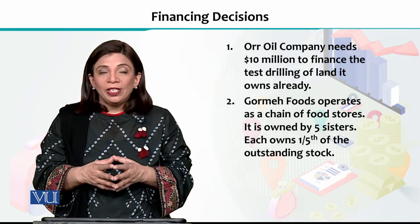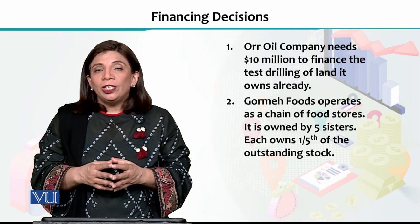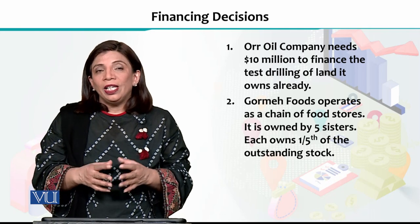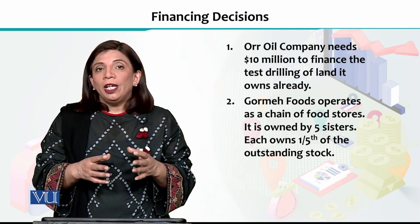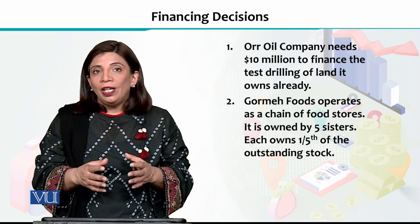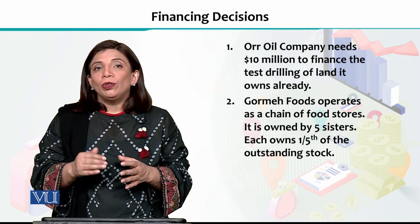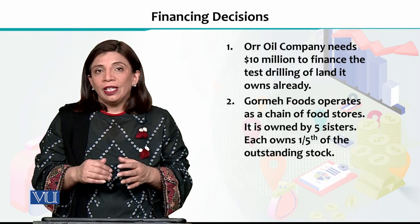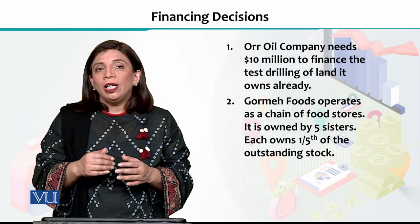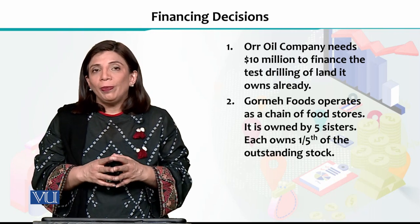As a first example, we are taking an oil company that conducted surveys and found out that for a certain piece of land, if they drill, there is a possibility that oil can be extracted. So now they need money to be able to drill. There is a tricky situation here — there is a possibility that if oil does not come out, then they will have to wind up their project.